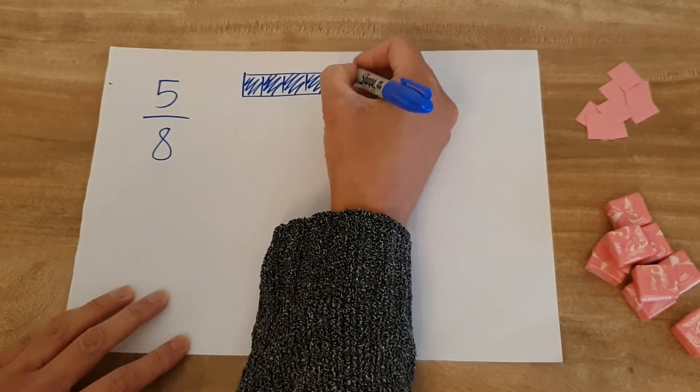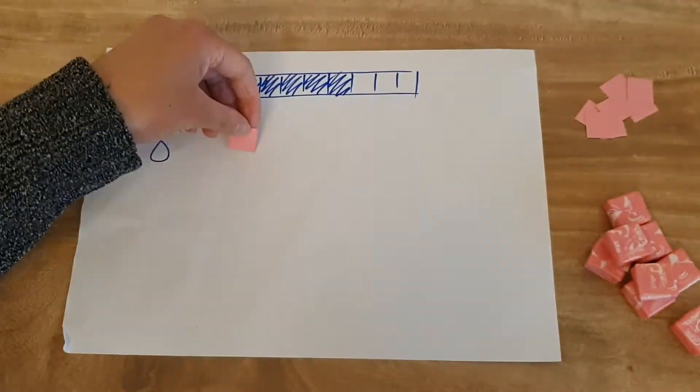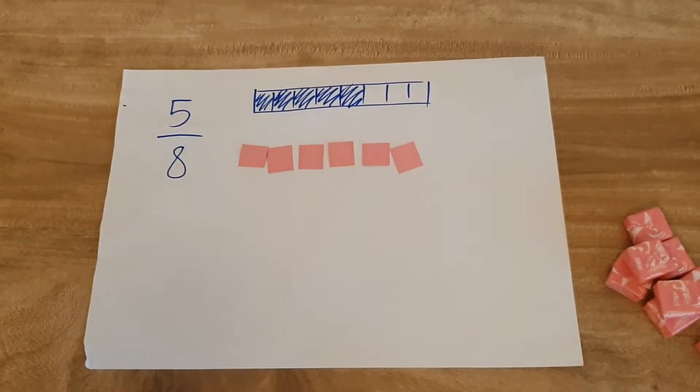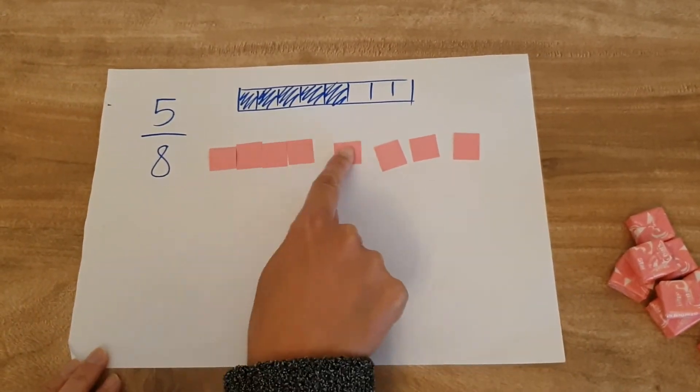If you want to take learning beyond ordering, you could encourage children to choose a fraction from the worksheet and find another way to represent it, such as using a bar model, pieces of paper cut up equally, or even objects.